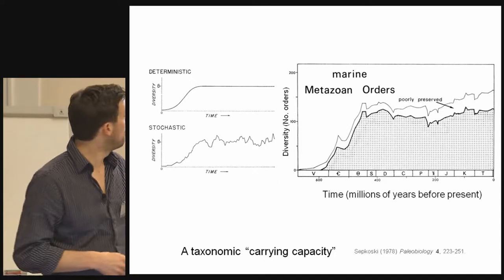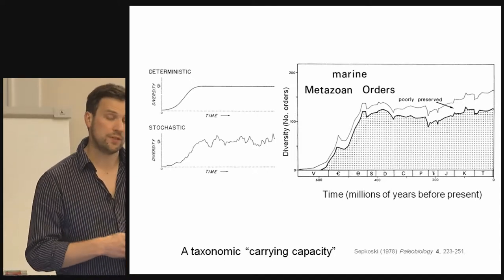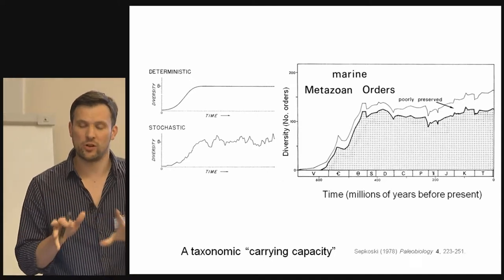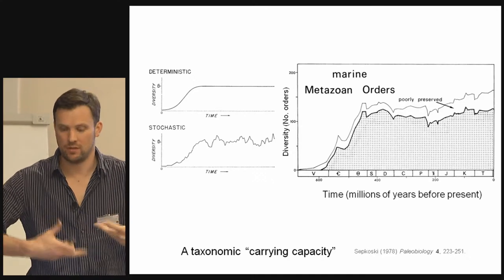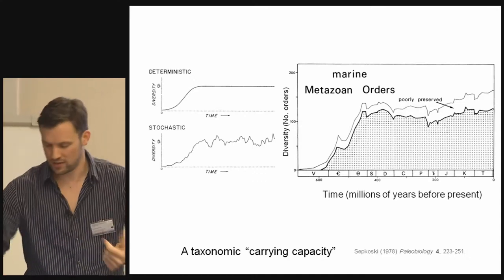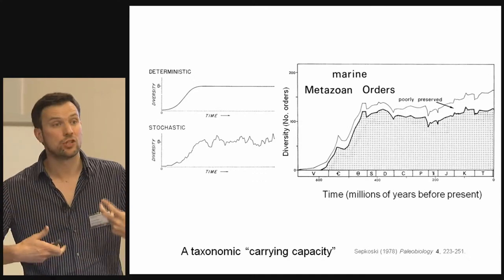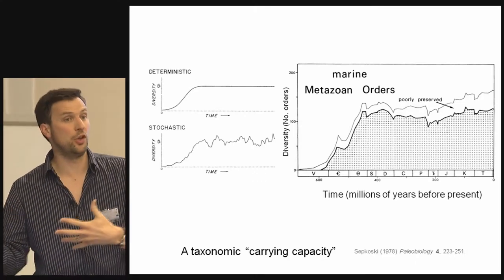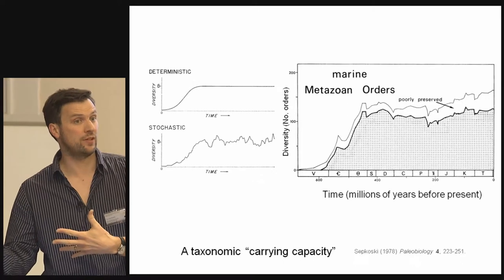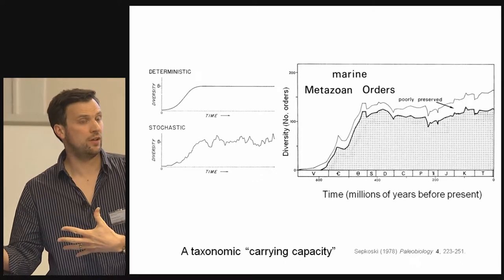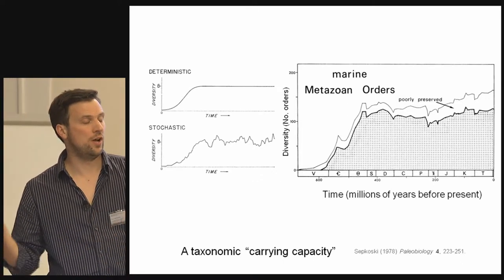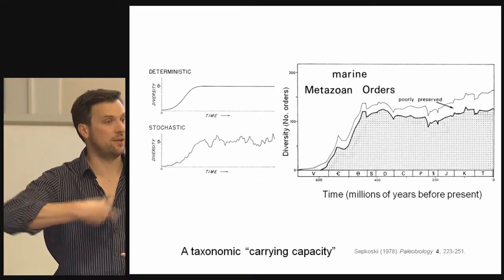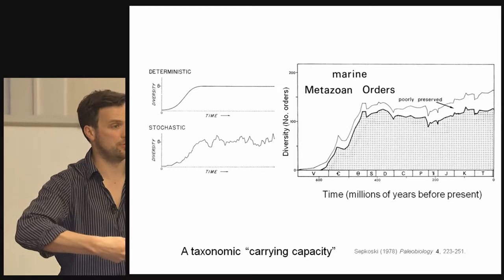What we want to do is find out how that stochasticity — how that randomness — is generated. And is it truly random, so a neutral process, or is it driven by some kind of biotic competitive component?